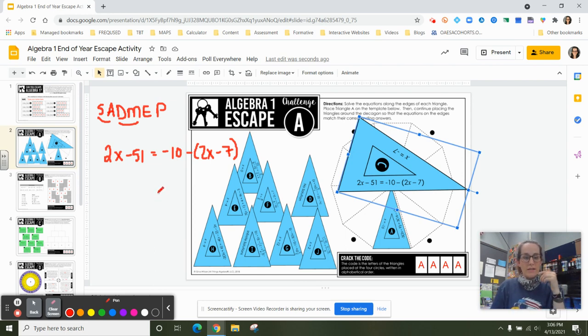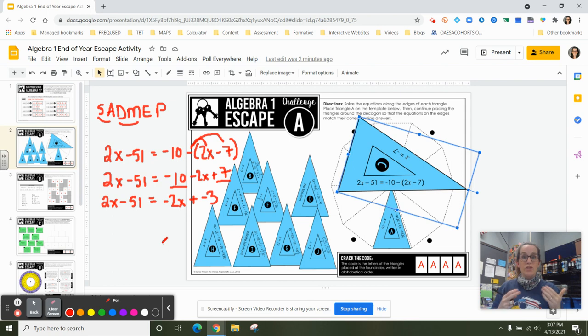Then I start working through the problem. I'm going to simplify before I start doing any solving. So 2x minus 51 equals negative 10. I'm going to distribute that negative. So I have minus 2x plus 7. I'm going to simplify that right-hand side of my equation by combining like terms. So I've got negative 10 plus 7, so I've got negative 2x plus negative 3. And now this is the point where I don't have anything else to simplify so I can start solving.